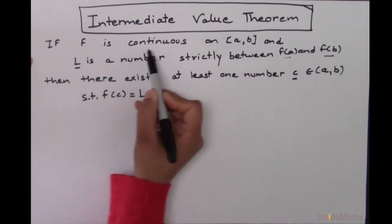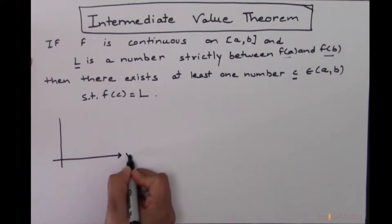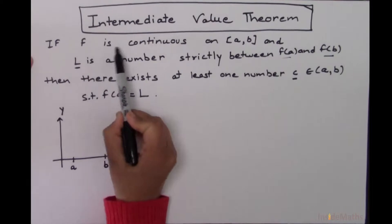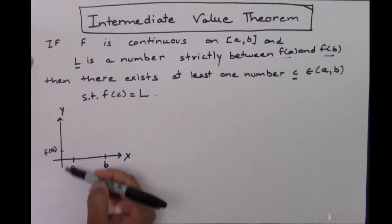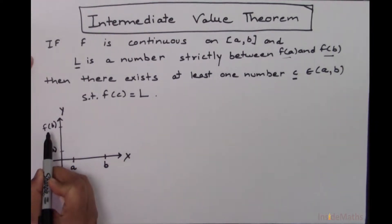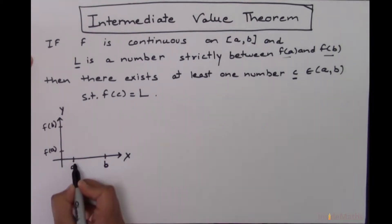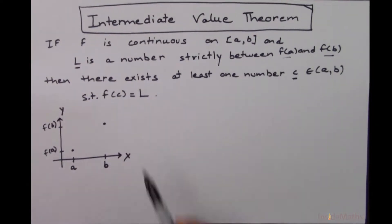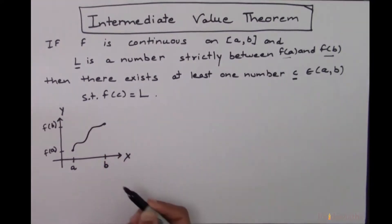I'll explain it one step at a time. It says f is a continuous function on the closed interval a to b. I'll draw the x-y axes — let's say this is the point a and this is the point b. Since f is continuous in this interval, f of a must be defined somewhere on the y-axis, and f of b is also defined. The curve of this function is continuous without any breaks, holes, or jumps.